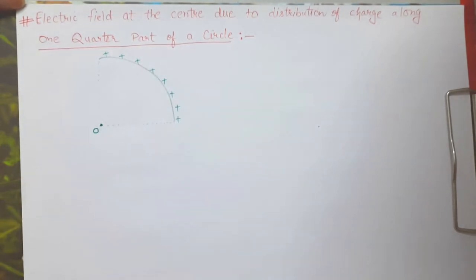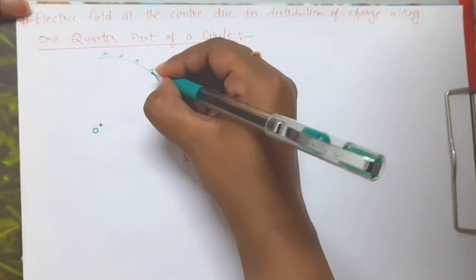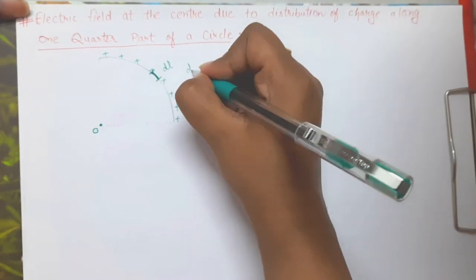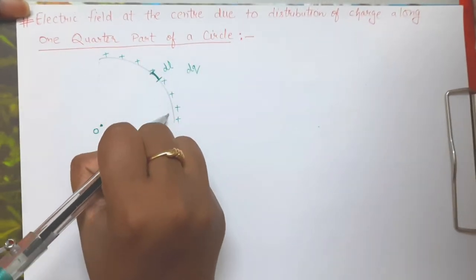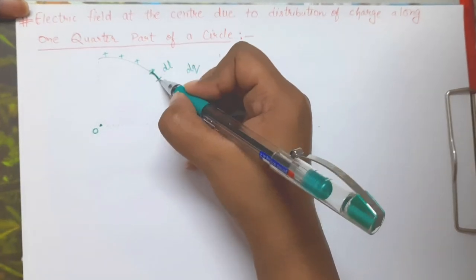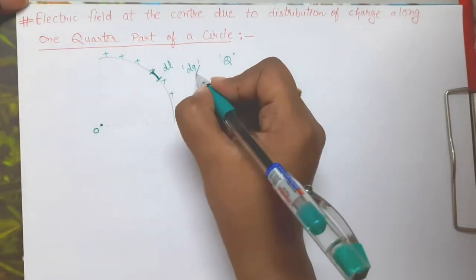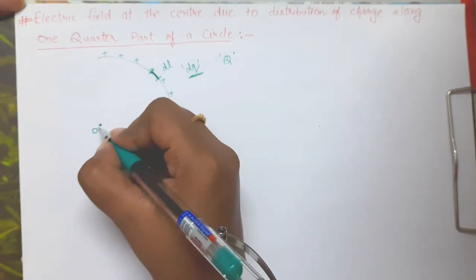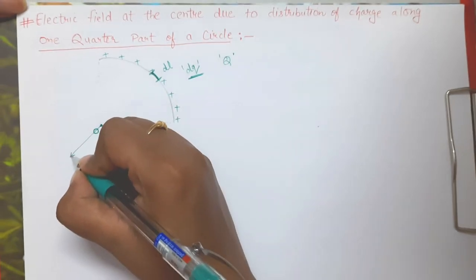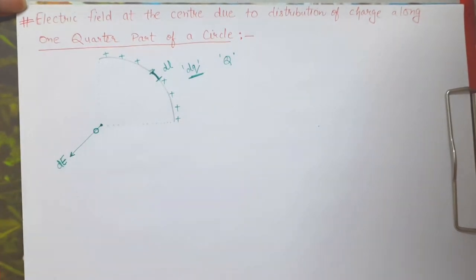What we are going to do is, as always, we are going to cut a small length dl — a small length dl having small charge dq. Suppose the overall charge along this quarter part is capital Q, and this small length dl carries a small charge dq. Due to this small charge dq there will be some amount of electric field at point O, designated as dE.